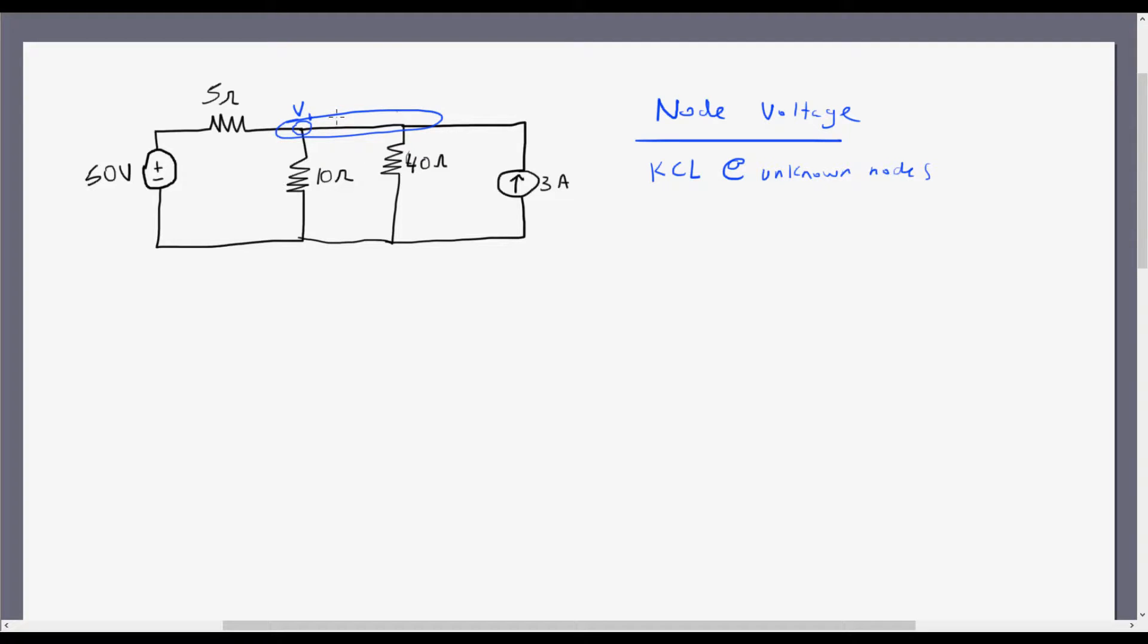So you've got to get used to thinking that way, that if there's nothing kind of blocking these two, like an inductor, a capacitor, a voltage source, a resistor,